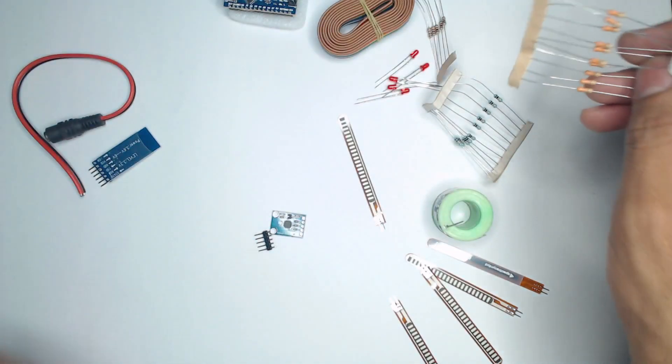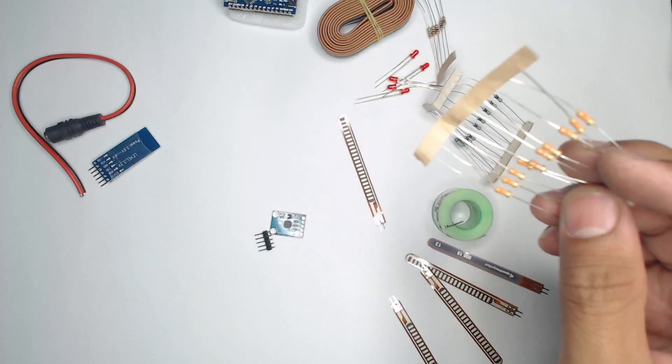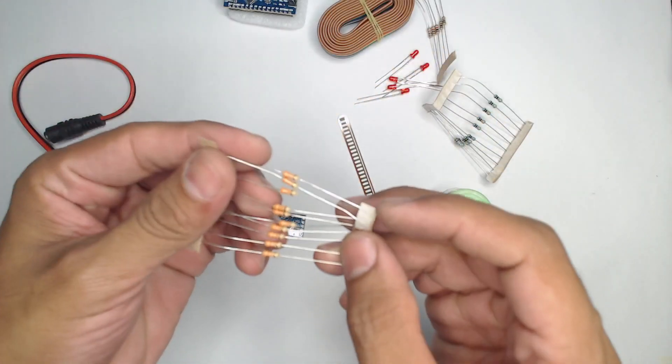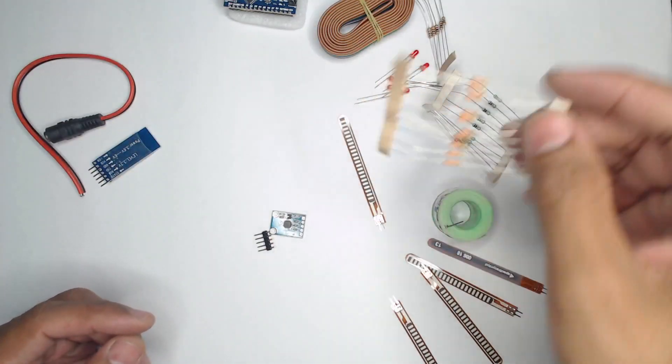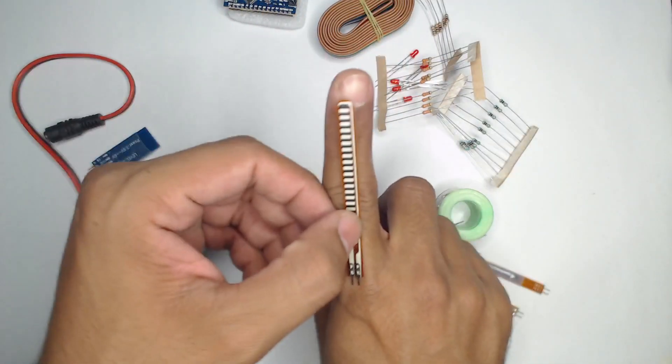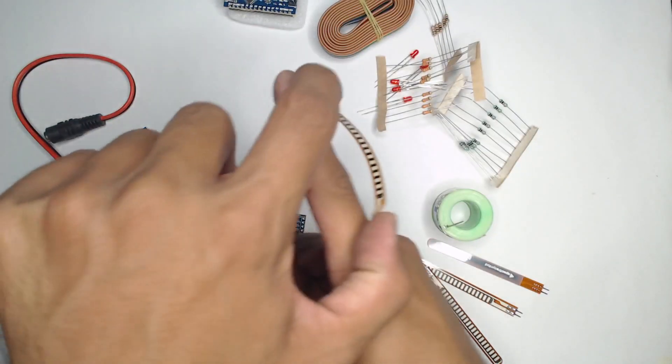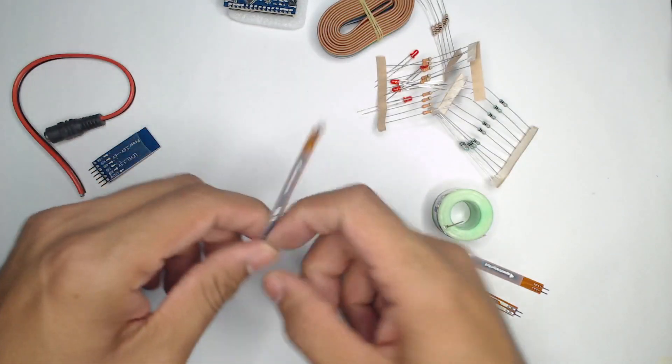The reason why I have selected this particular resistor to be 30k is because these are the flex sensors that I'll be mounting on the fingers, so that whenever we bend it, it is going to recognize a gesture.